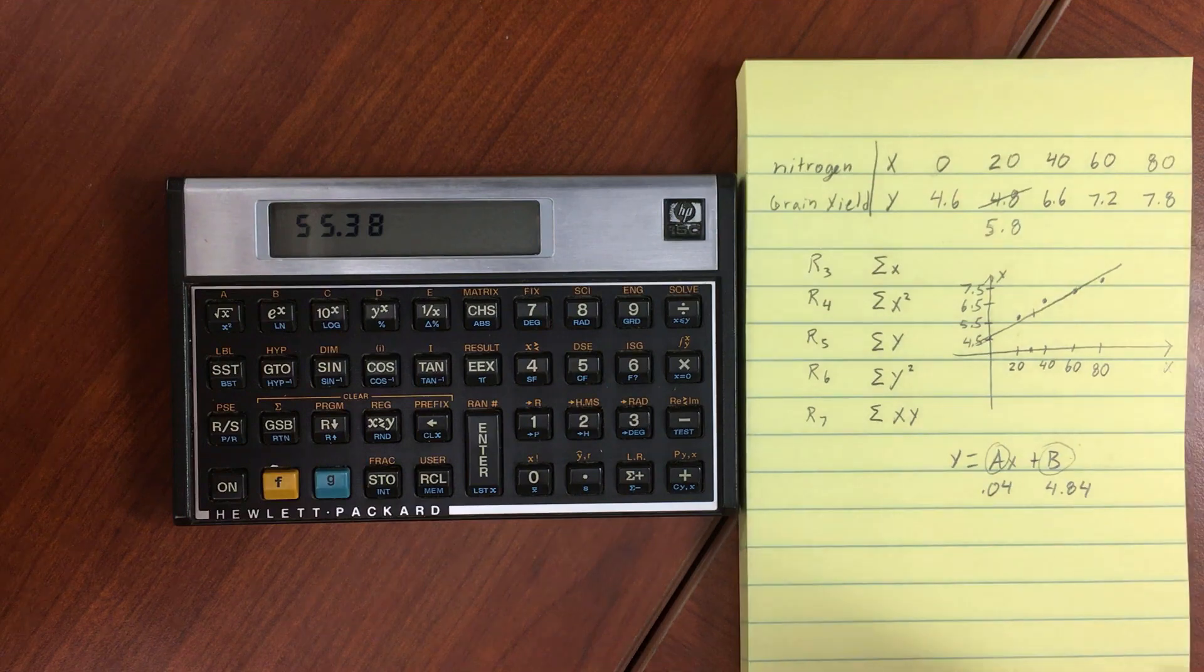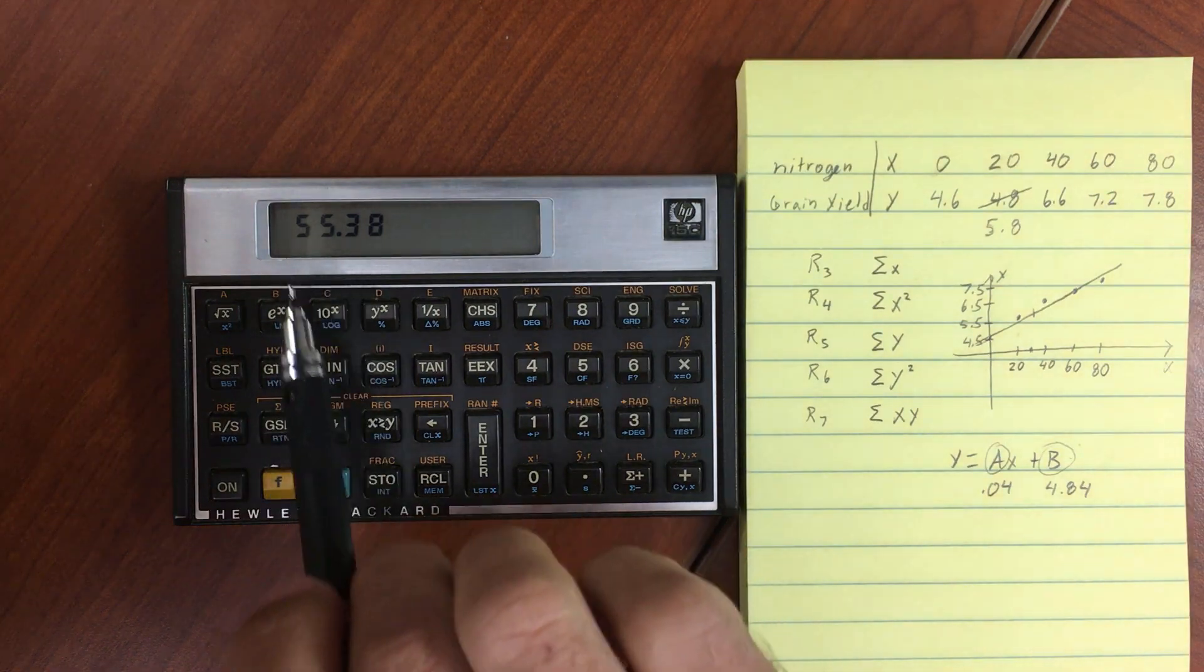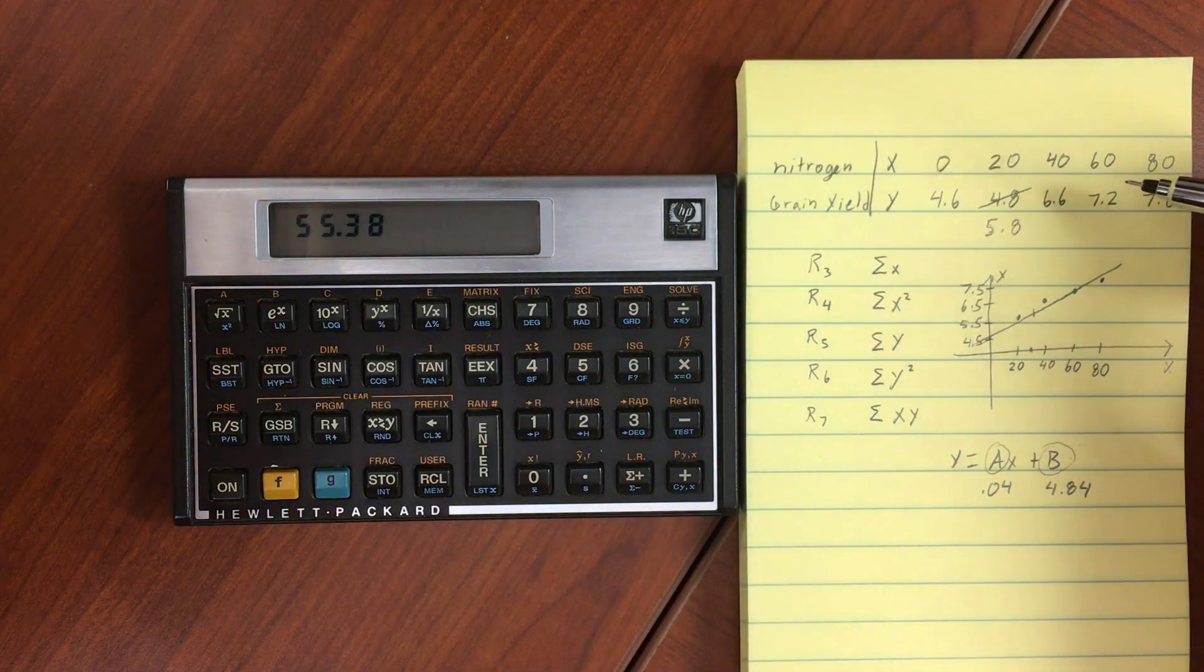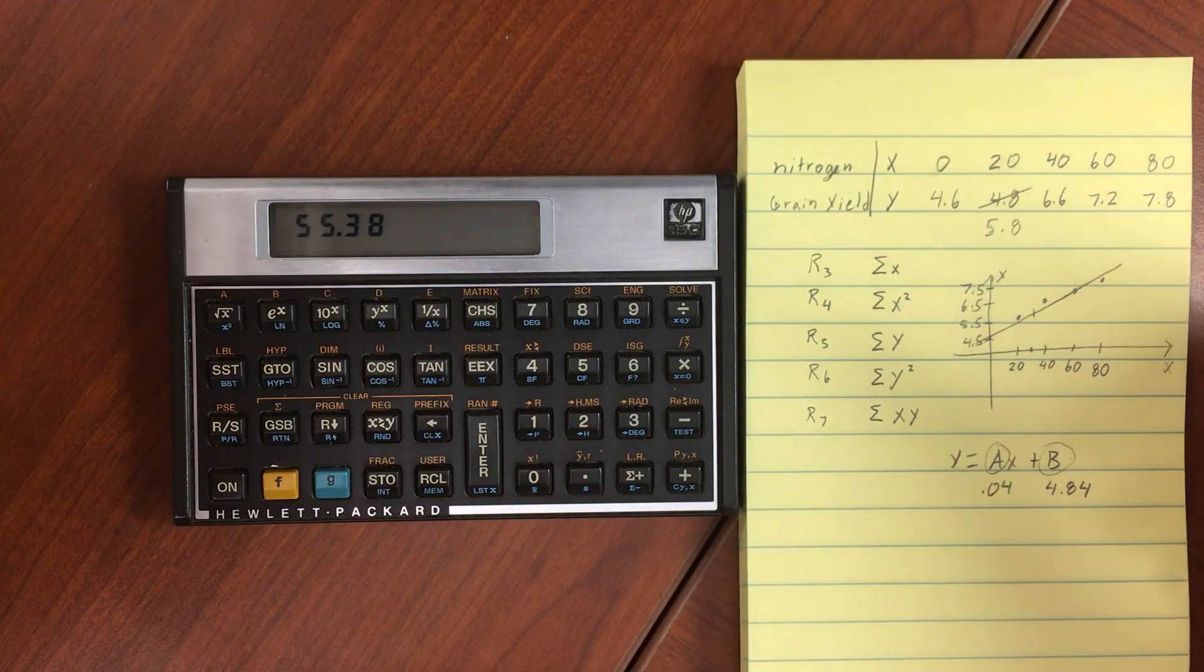That gives us our slope. Now we have an estimated X value of 55.38, and that is about what we expected it to be.